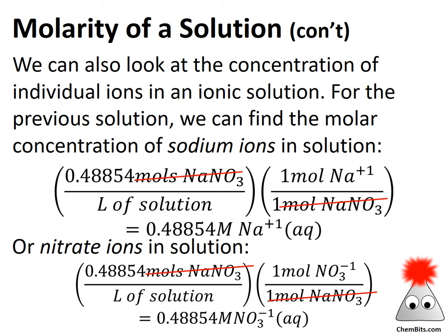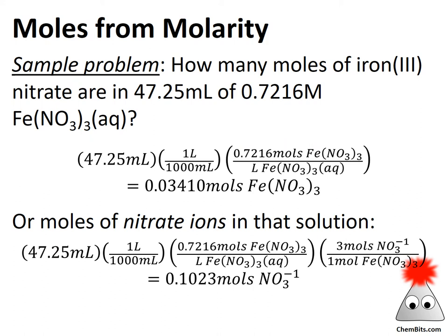What if we go the other direction? Looking at a problem more like what we see in lab: how many moles of iron(III) nitrate are in 47.25 milliliters of that concentration of iron nitrate solution? State labels are extremely important when talking about solutions to keep things straight. Here I've put in an explicit conversion from milliliters to liters, and our concentration is moles of iron nitrate per liter of iron nitrate solution — that's where the aqueous label comes in. Canceling out our units, we're left with simply moles of iron nitrate.